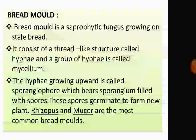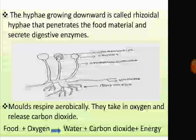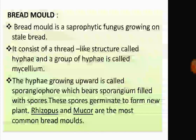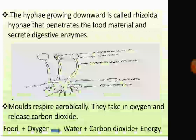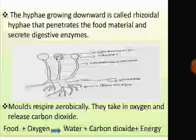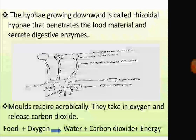Bread mold consists of a thread-like structure called hyphae, as shown in the figure. A group of hyphae is called mycelium. It appears over the surface of rotten materials. The hyphae growing upward is called sporangiophore, which bears a sporangium filled with spores.